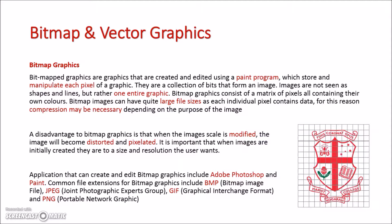The main disadvantage to bitmap graphics is once they're modified, they get either distorted or pixelated. And you might have seen this before — when you zoom in on a graphic, it starts to go all blocky, because the pixels can't change with the scale. Basically, they always stay the same size, so if you zoom in, the pixel just gets bigger, and that's why we get that blockiness.